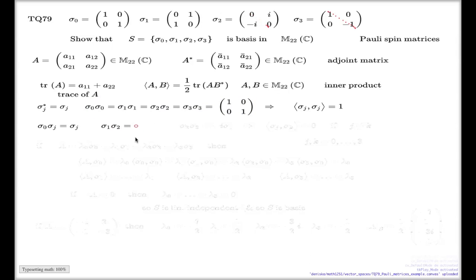Now if I couple sigma 1 and sigma 2, I claim it will be negative i sigma 3. If you multiply these two, it will be this matrix with the extra negative i factor. Let's just see that.